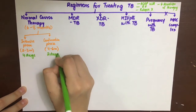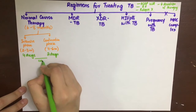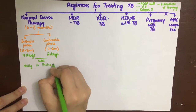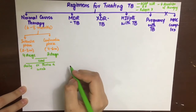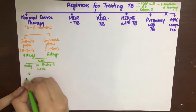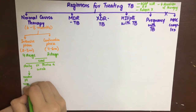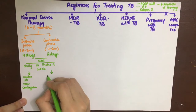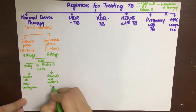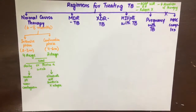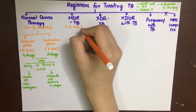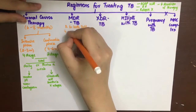In the intensive phase, four drugs are used; in the continuation phase, two drugs are used. Both are bactericidal and can be given daily or thrice weekly to improve patient compliance, which is very important in TB management. The intensive phase renders the patient non-contagious, while the continuation phase prevents relapse by eliminating the remaining bacteria.